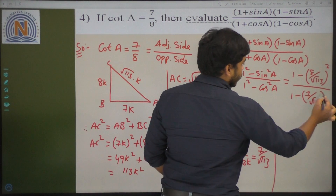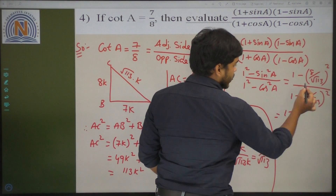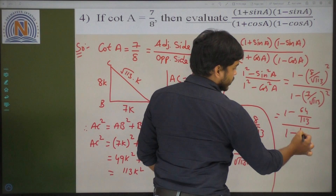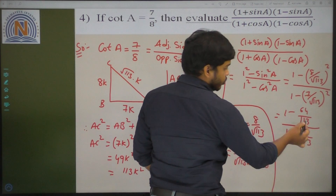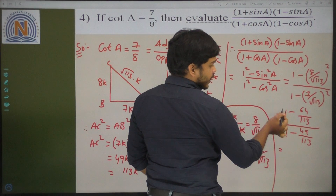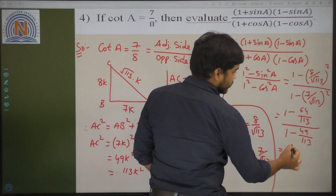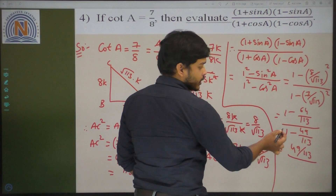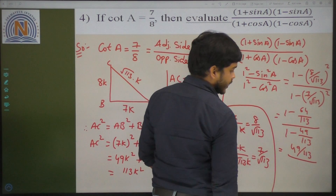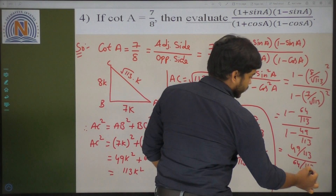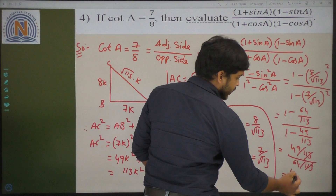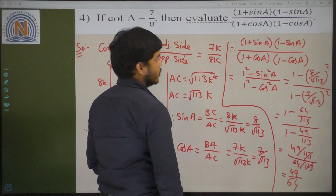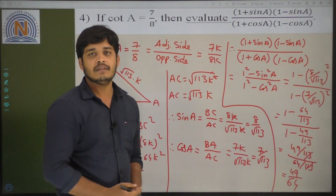So 1 minus 64 by 113, divided by 1 minus 49 by 113. That gives 113 minus 64 over 113, divided by 113 minus 49 over 113. So numerator is 49 by 113 and denominator is 64 by 113. The 113s cancel, and the remaining value is 49 by 64.